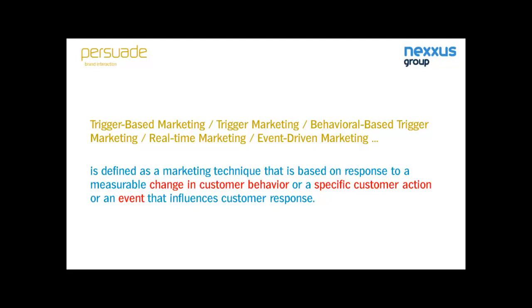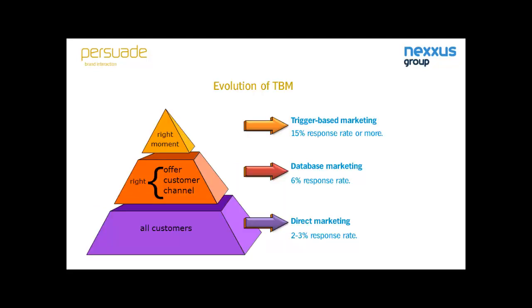Trigger-based marketing evolved from direct marketing through database marketing. With direct marketing, we sent out huge batches of direct mail to a broad database, sometimes with very little selection criteria, and were normally happy with 2–3% response. We got smarter with database marketing, looking at the right offer for the right customer in the right channel, making more elaborate selections and increasing response to around 6%.